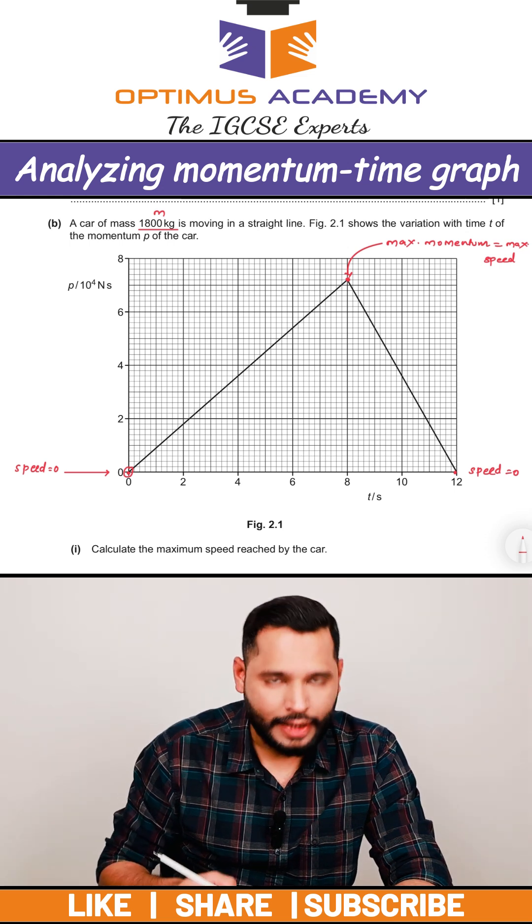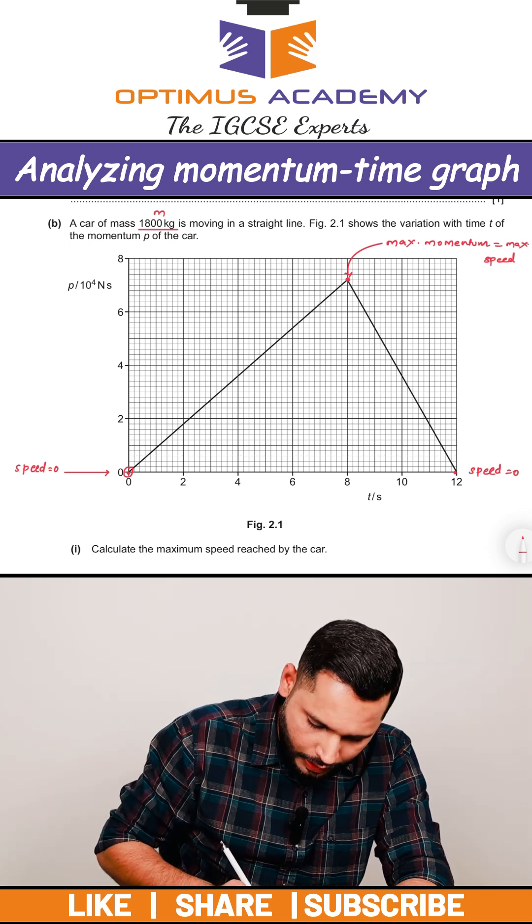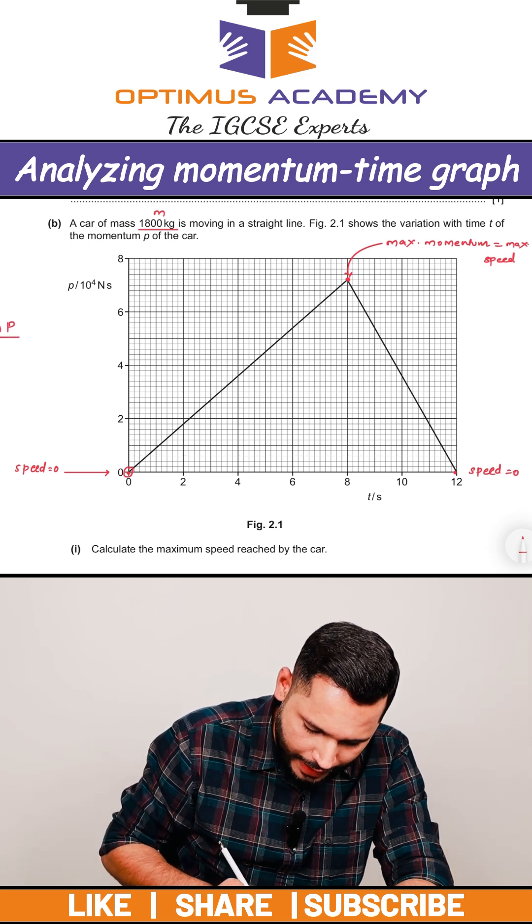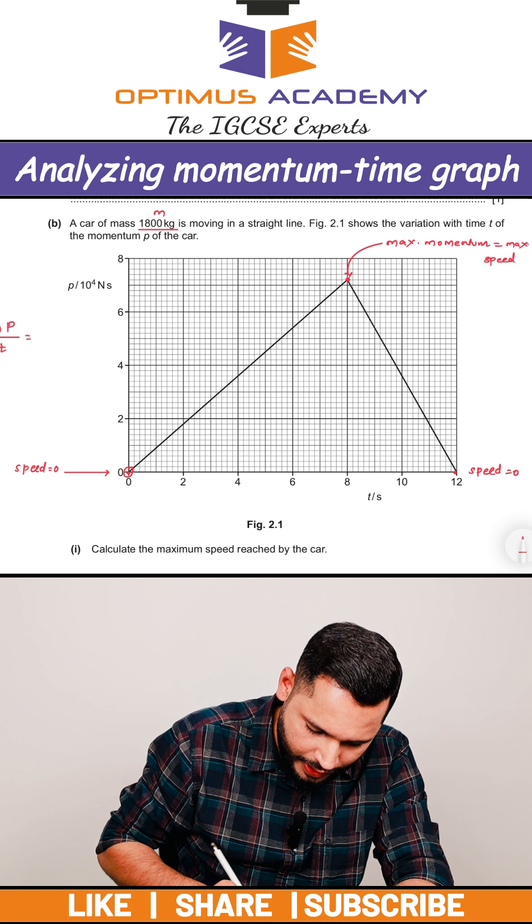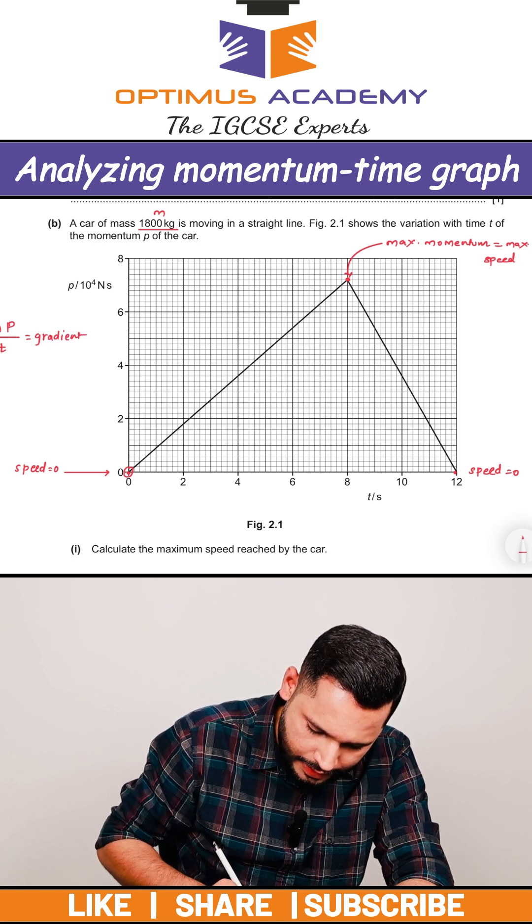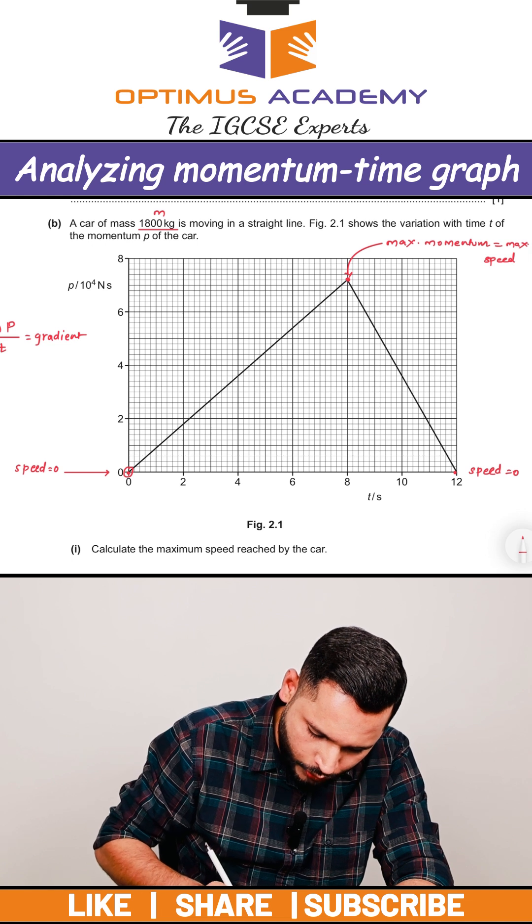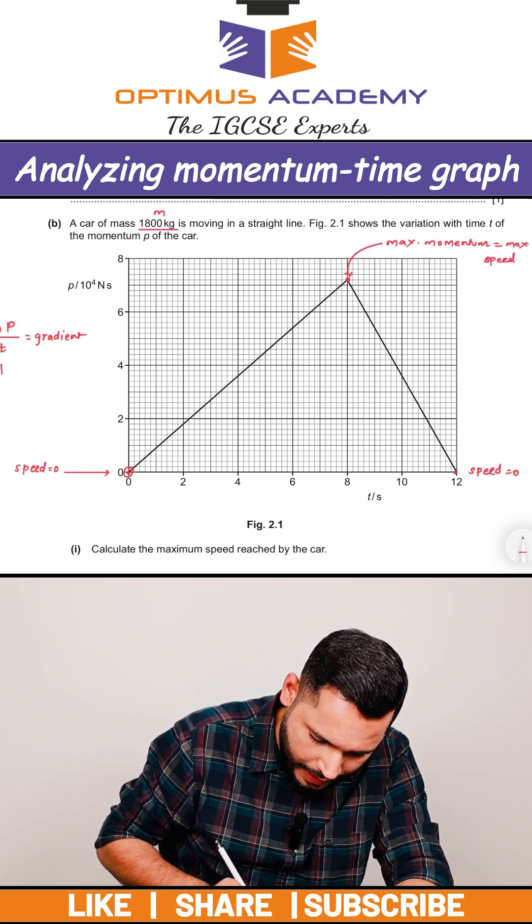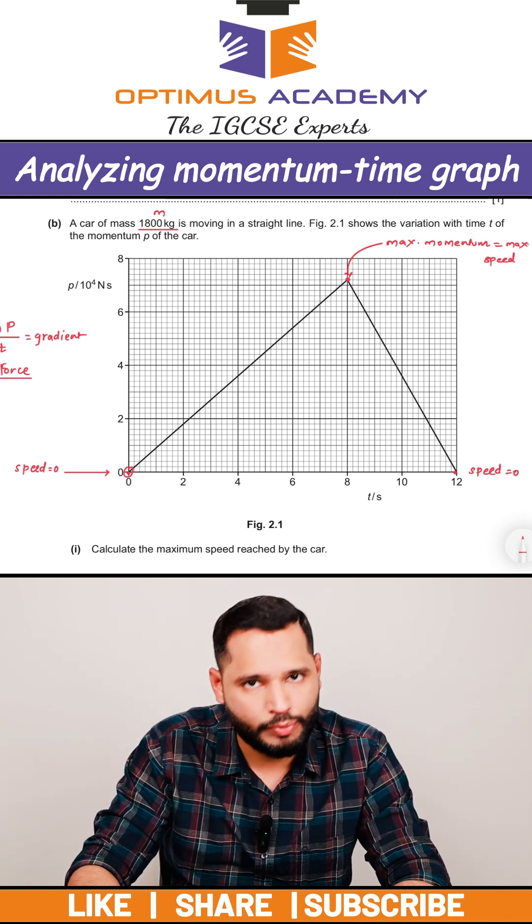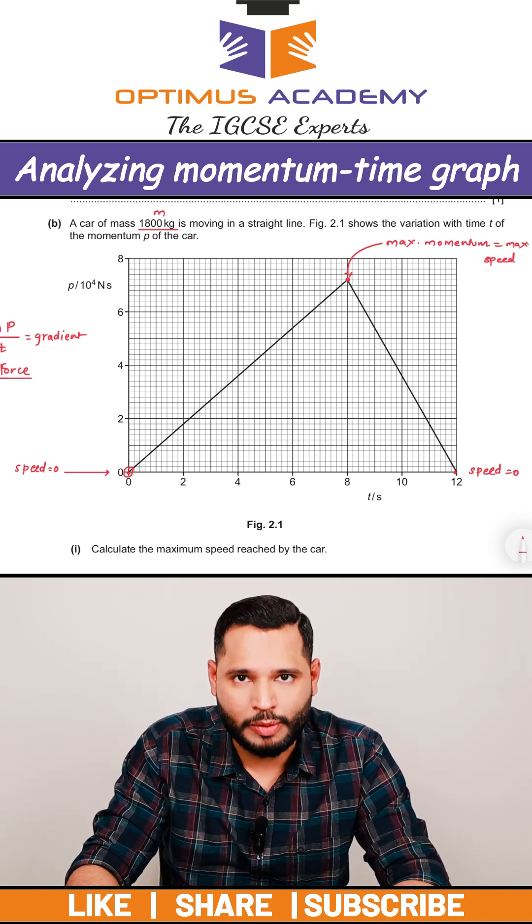If we see the x-axis it is time and y-axis this is momentum. If we take any two values and we calculate change in momentum and we divide it by time, we are going to get gradient of the graph. And this gradient of the graph is also going to be the force acting on the object. Why? Because force is rate of change of momentum.